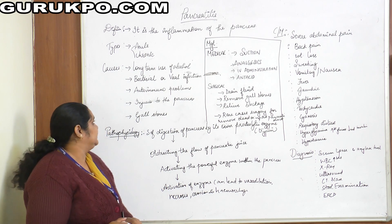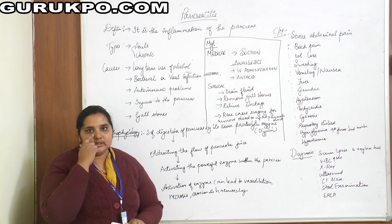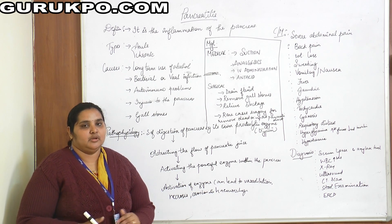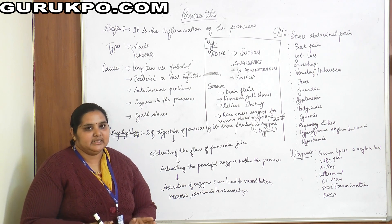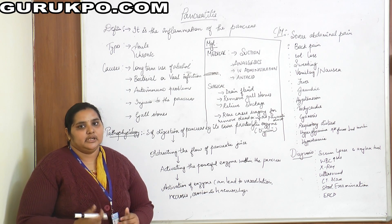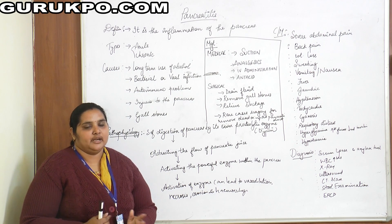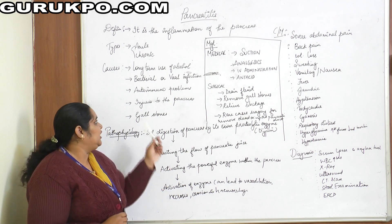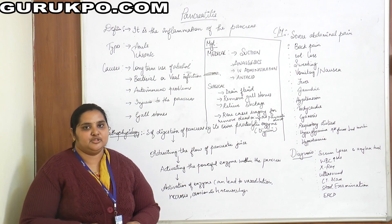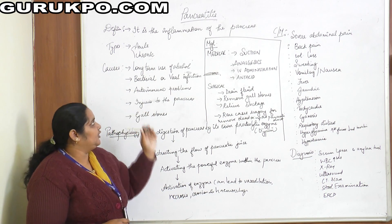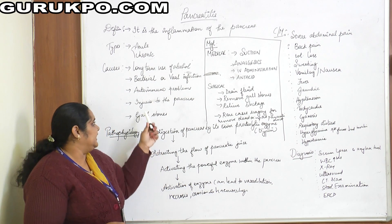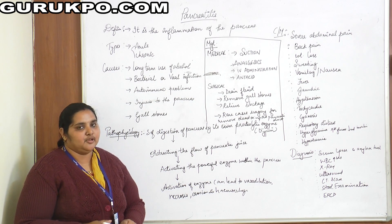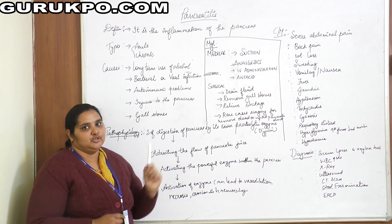Next is autoimmune problems. The immune system normally resists bacterial, viral, or fungal infections, but when the immune system attacks itself, there will be autoimmune problems, which is one cause of pancreatitis. Next, injuries to the pancreas — if there is an injury due to any accident, that is also a cause of pancreatitis.